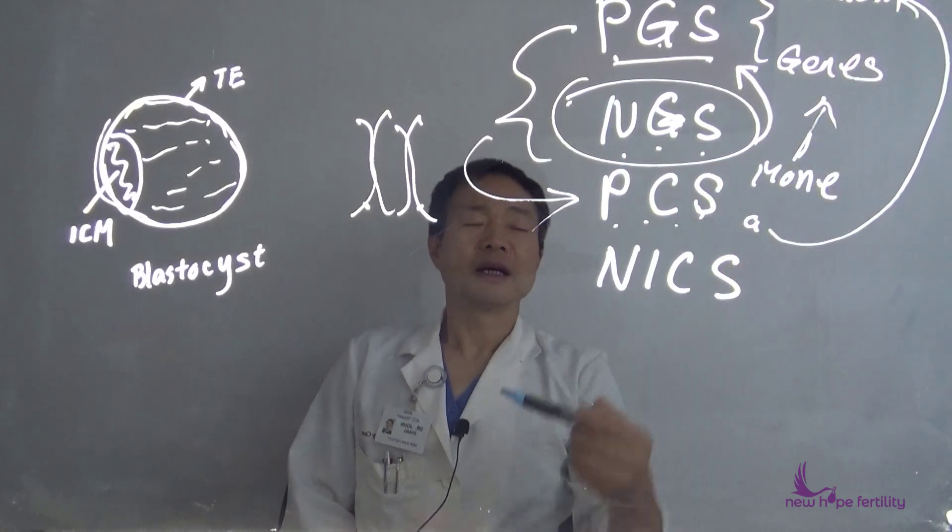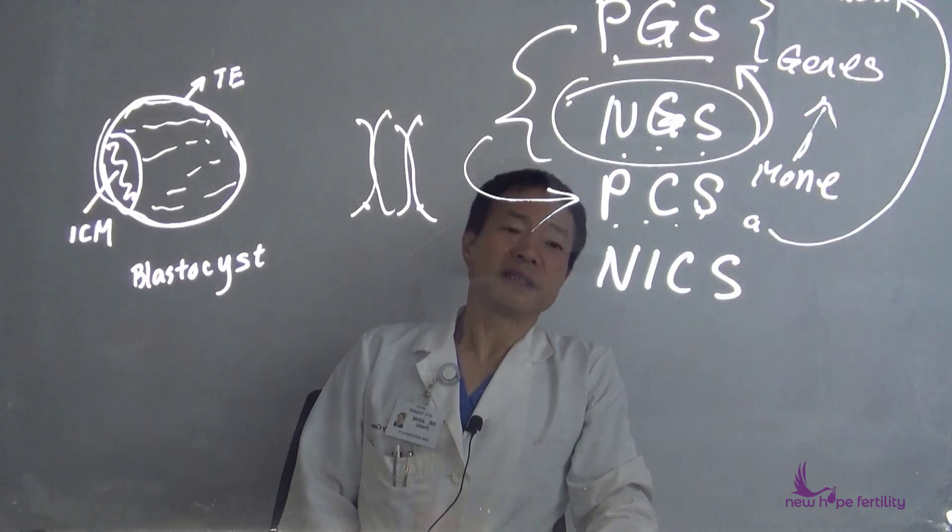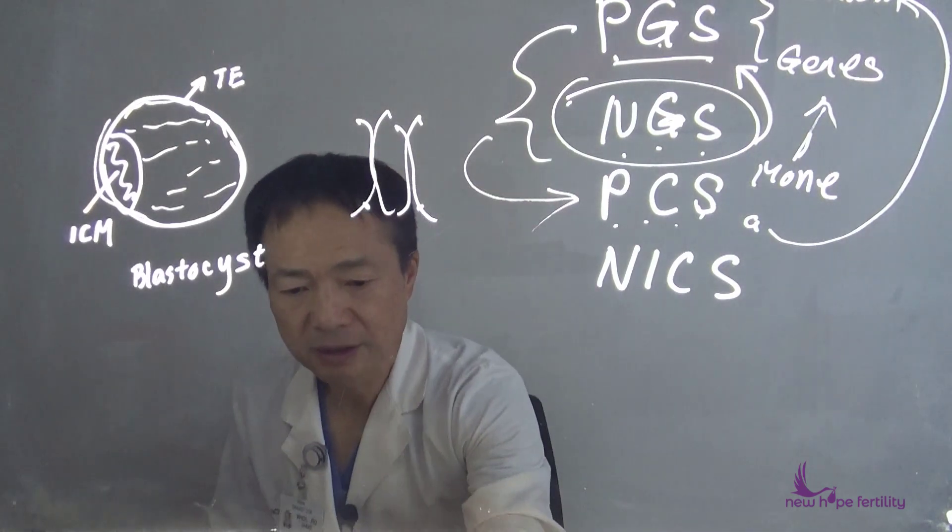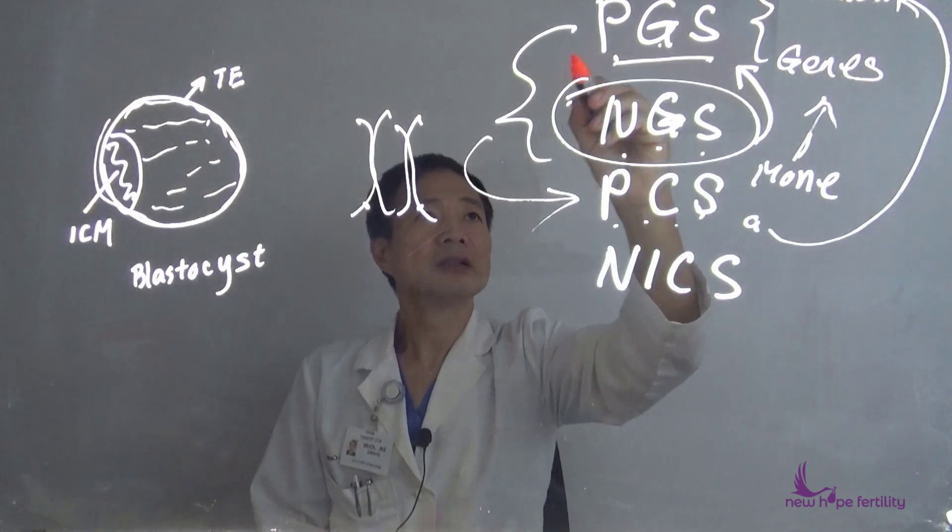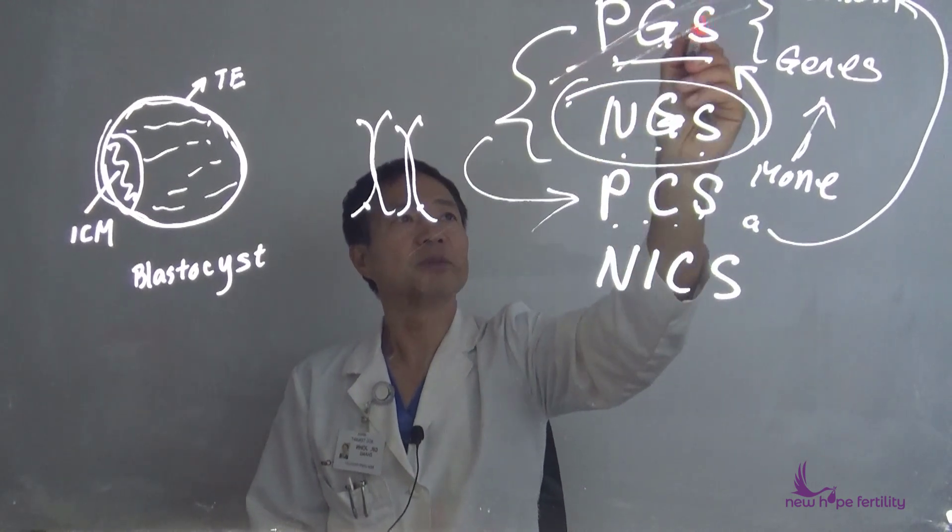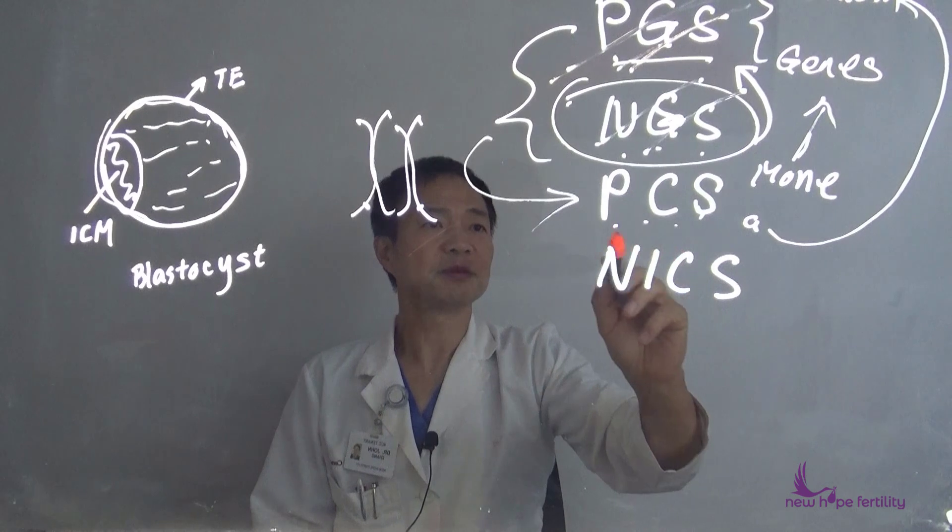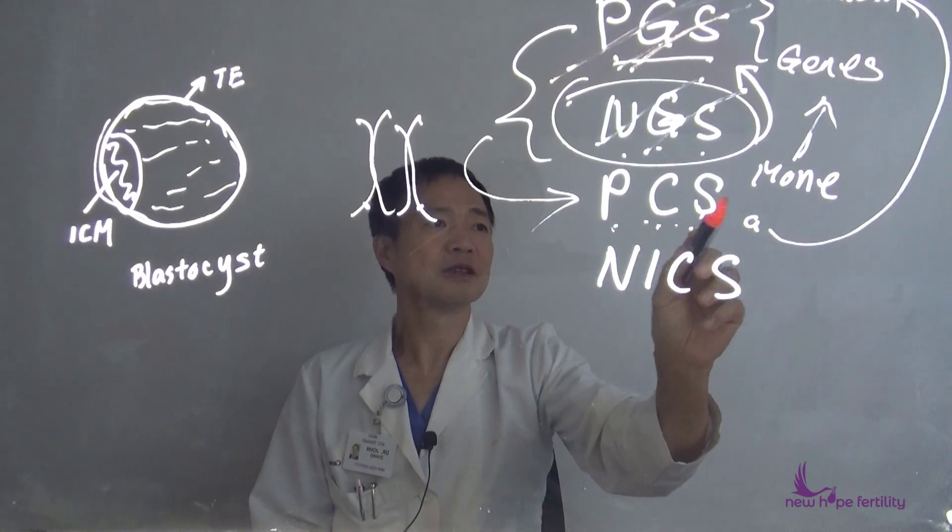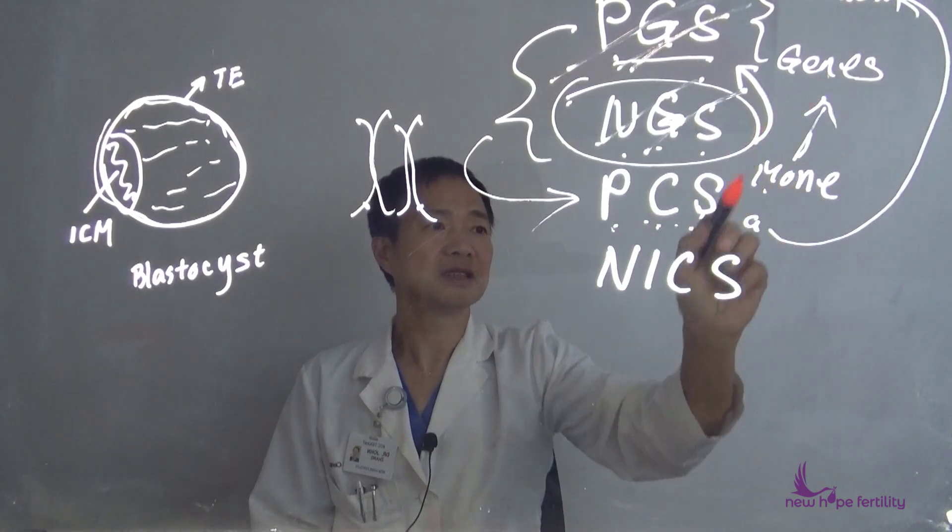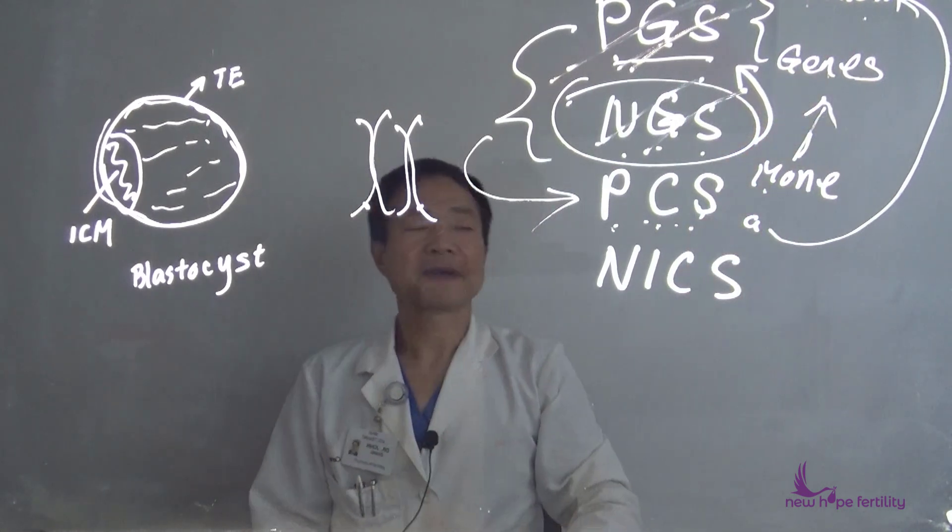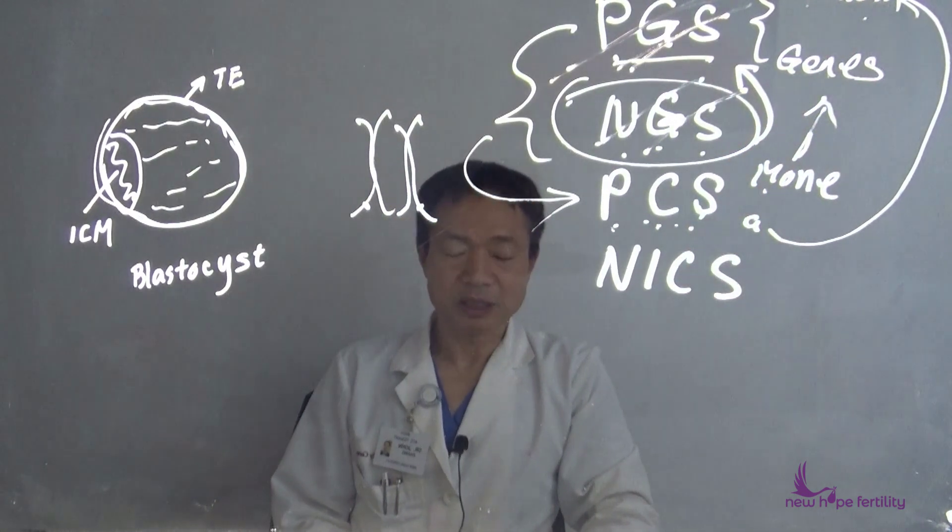But you only need to remember that we don't really see PGS very often anymore, and we don't really see this anymore. The new standard says PCS-M for checking genes, and A for aneuploidy to check chromosomes. So now we get this terminology a little bit clear.